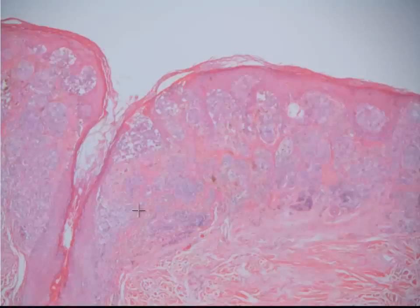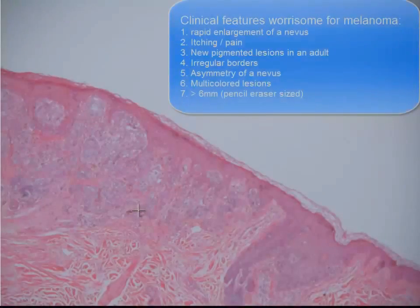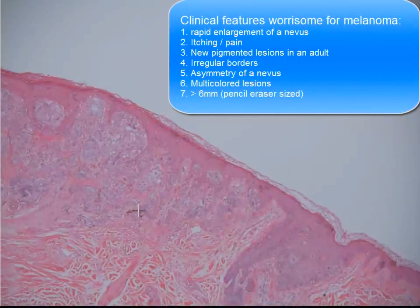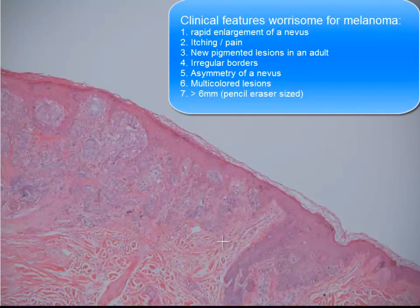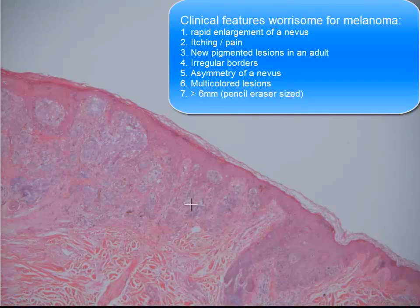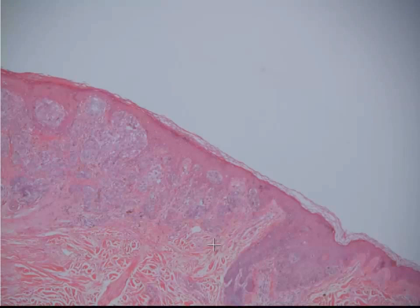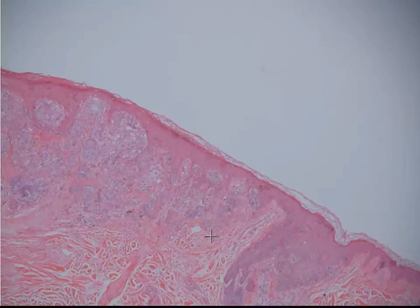Other features that help with that distinction: these lesions have very irregular borders and are not symmetrical. There might also be some dermal mitoses seen in these melanocytes — in this case, if you search for them, you might find one or two, though often you don't find that many. In summary, what we have is a spectrum of melanocytic lesions ranging from a nevus all the way up to an invasive melanoma.